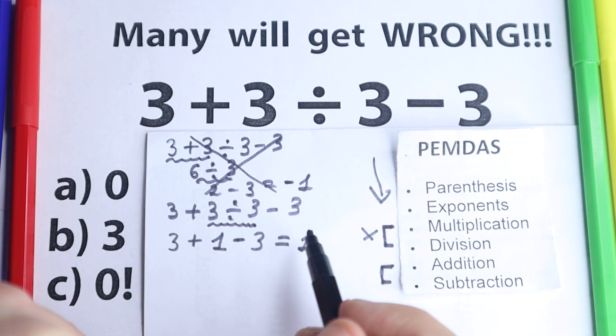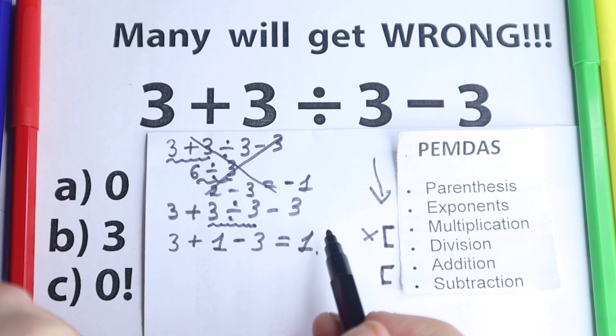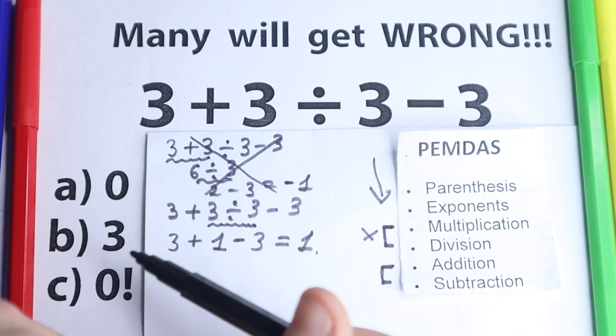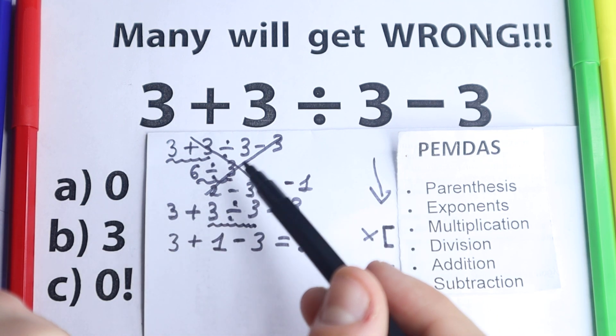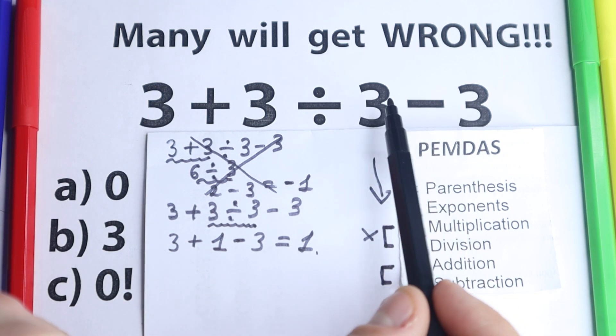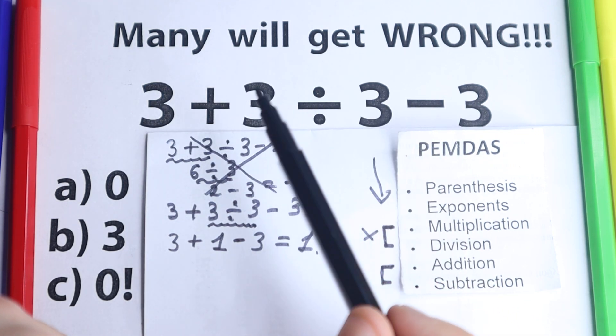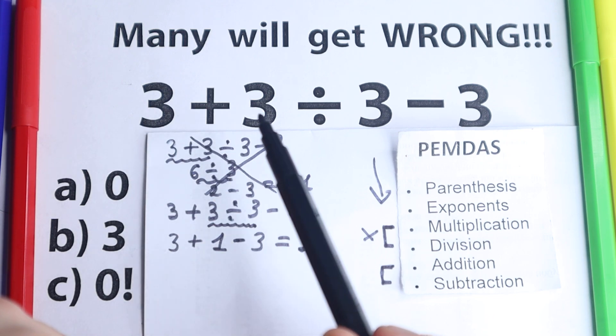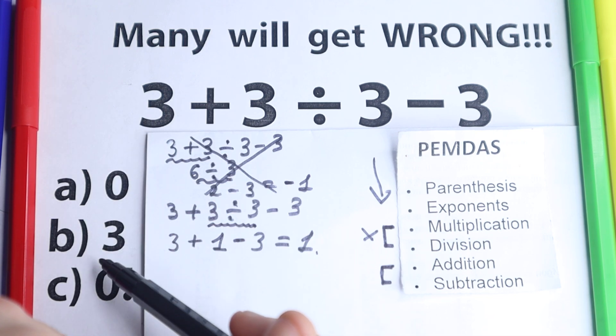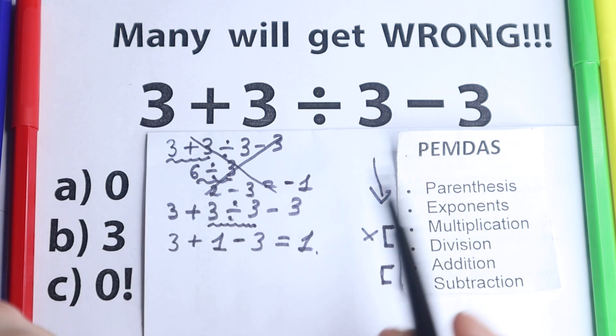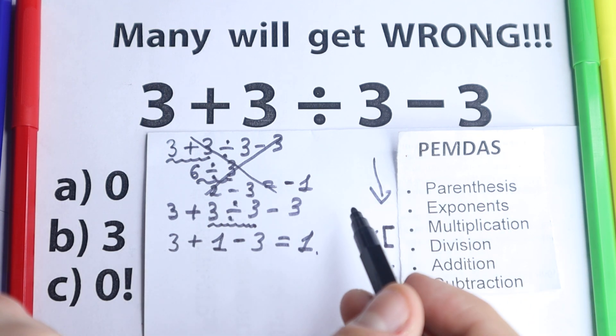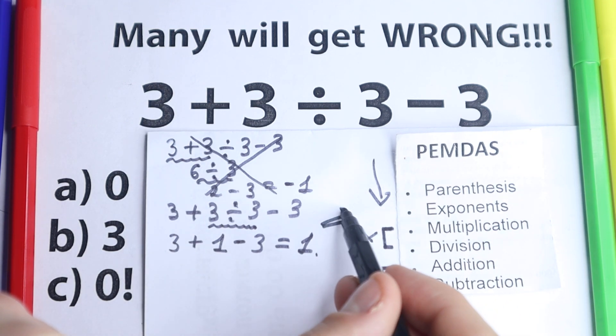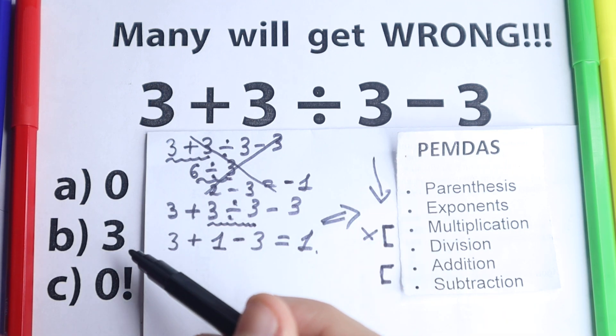According to PEMDAS, the correct answer is 1. But what about the options right here? We have option 0. It looks like maybe some students solved it 3 minus 3 equals 0, they divide and somehow say option 0 is correct. 1 is not equal to 3, so option B is incorrect as well. What about the correct option? Because we solved it according to the correct order of operations.